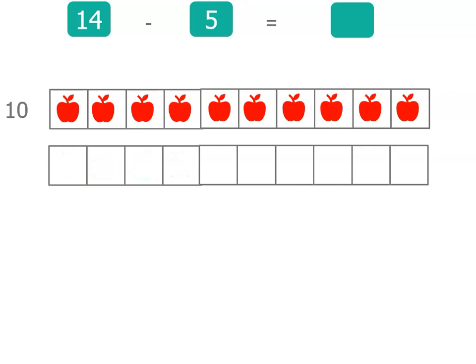See what we do there, we take away 4 and that takes us back to the number 10, and then we have one more to take away. So 14 minus 5 equals 9.